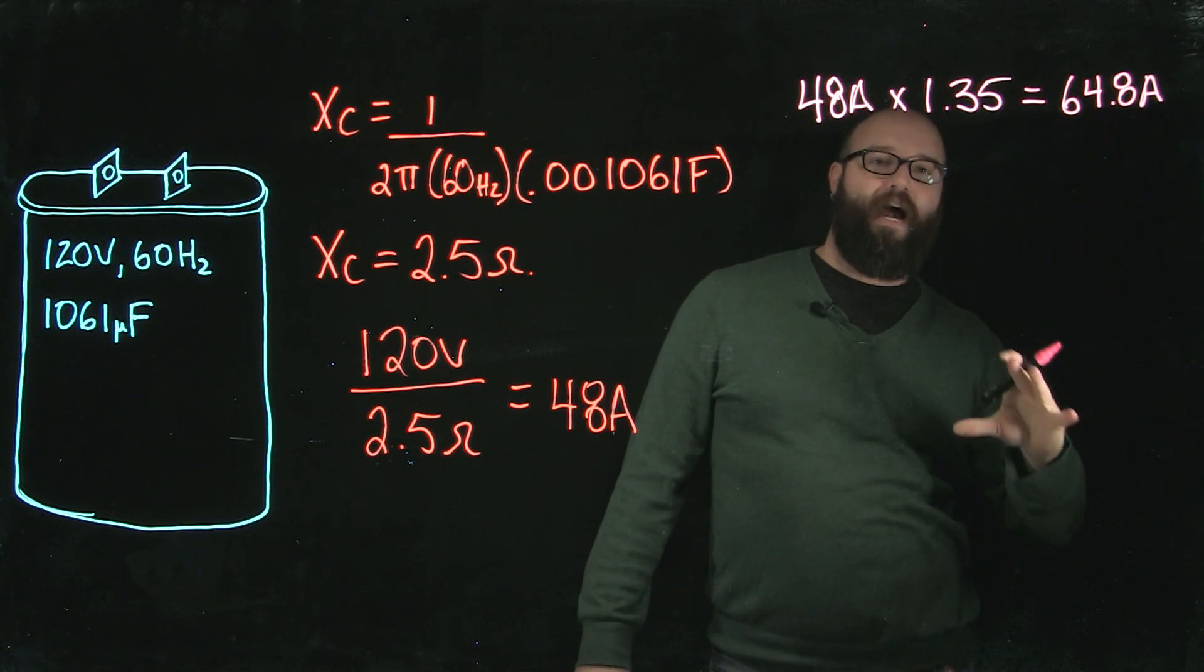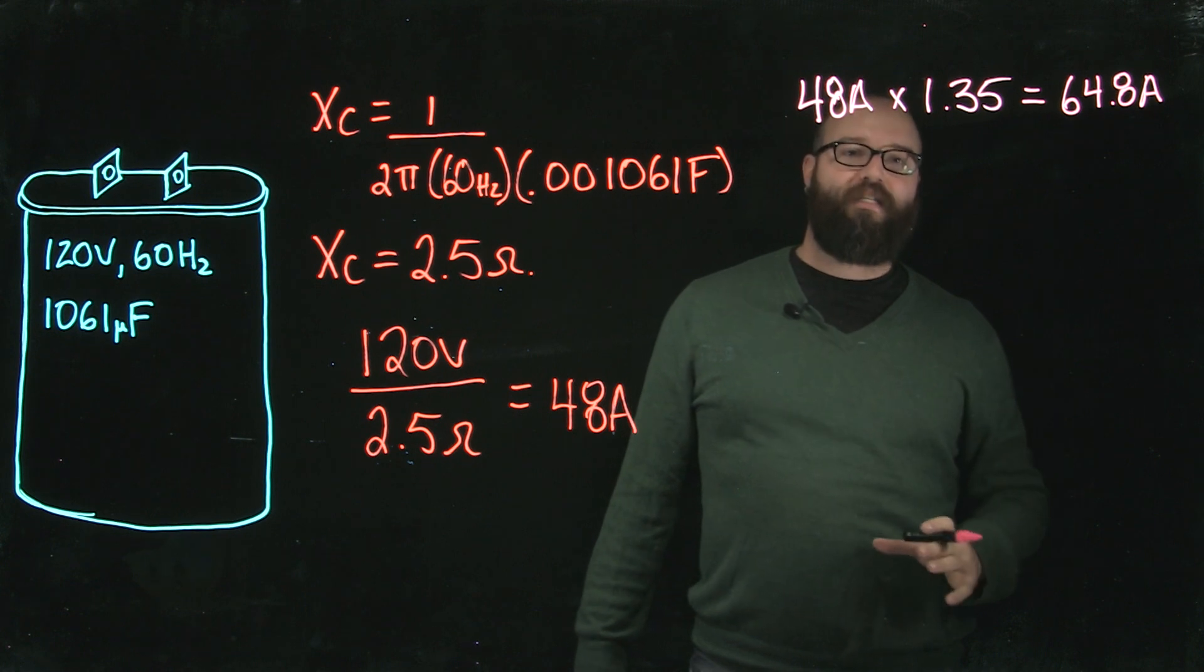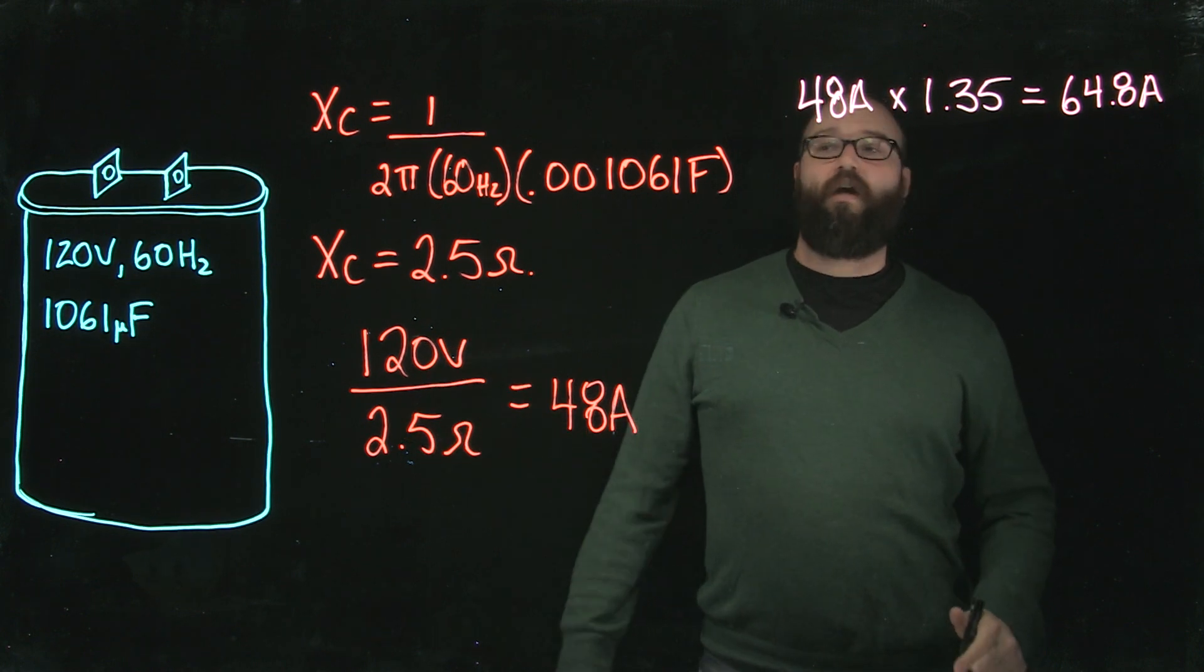Now, this number here is the absolute minimum that the ampacity of our conductor can be for our capacitor.